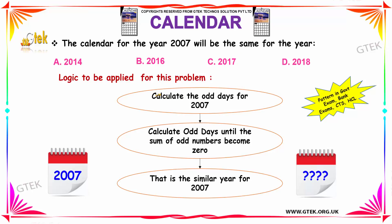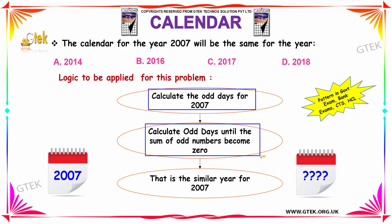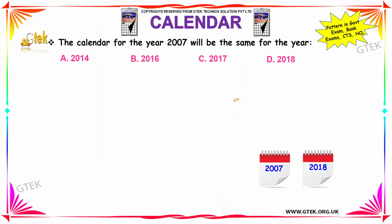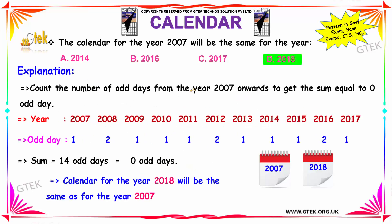First, you have to calculate the number of odd days for 2007. Then you have to keep adding the odd days year by year until the sum of odd days becomes zero (divisible by 7). When it becomes zero, the calendar will repeat and that year will be the same as 2007. Let us apply this logic to solve the problem.